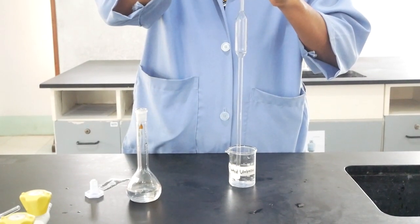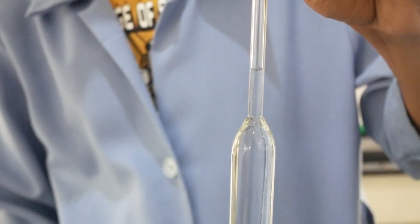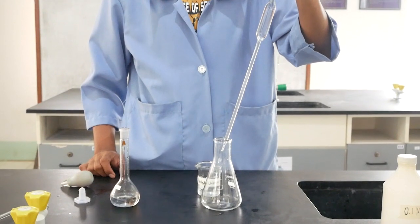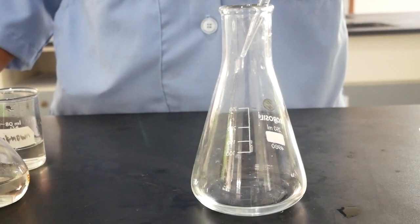Then pipette exactly 25 ml of this diluted hydrochloric acid solution into an Erlenmeyer flask, which we will use to titrate the solution. This is now the analyte.